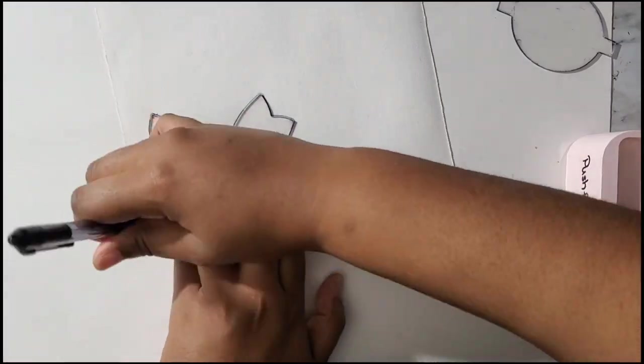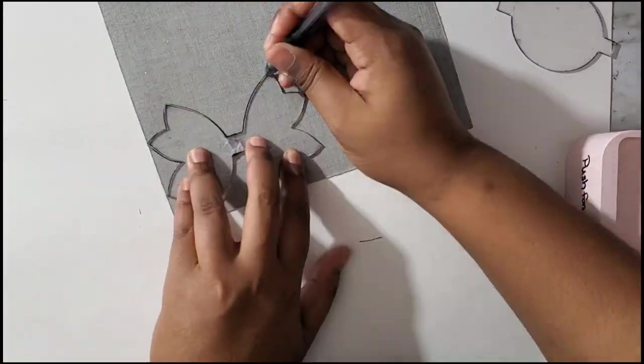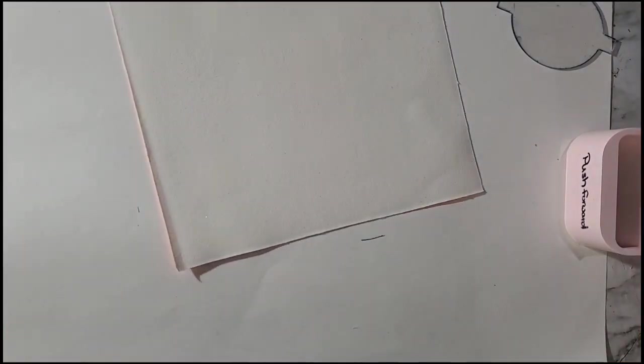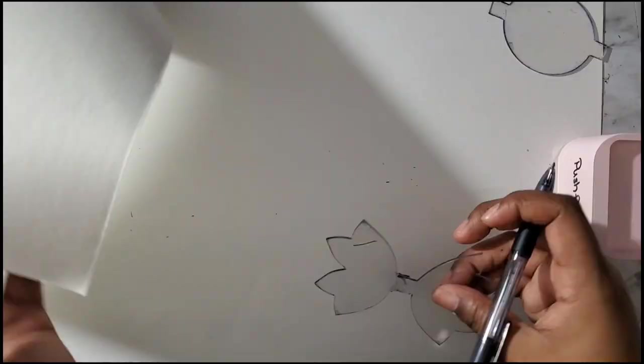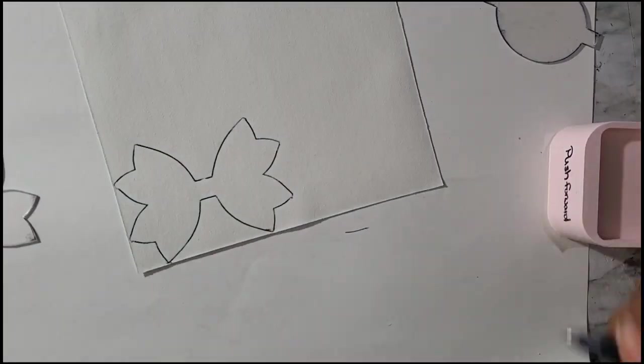So let's get started. First I trace out with my template on all of the glitter sheets. This is the back piece that will be in the back. Trace all of those out.